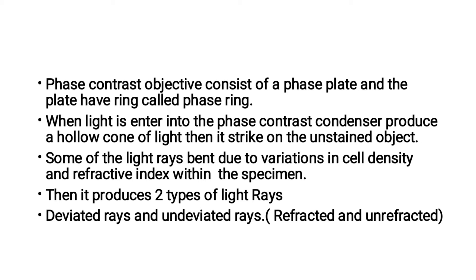When light enters the phase contrast condenser, it produces a hollow cone of light that strikes the unstained specimen. Some of the light rays bend due to the variation in cell density and refractive index within the specimen.